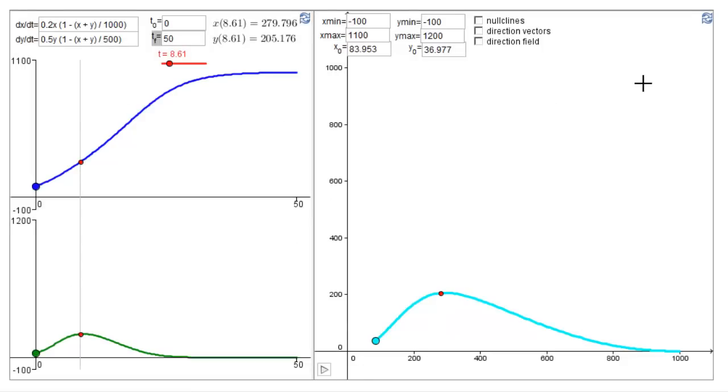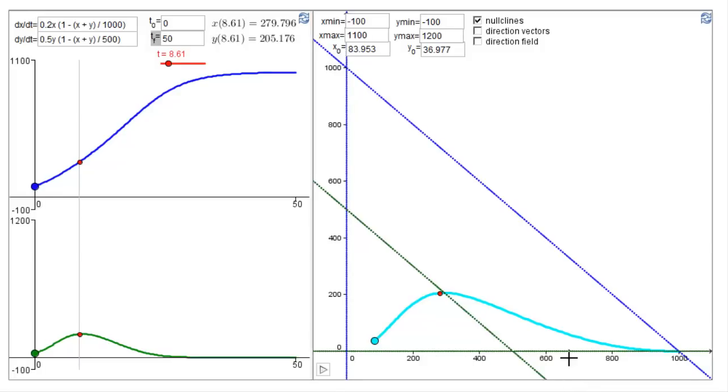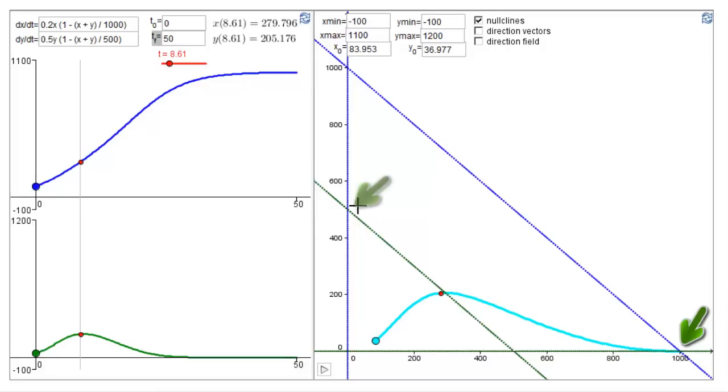In the phase plane applet, you can check the nullclines box to show the nullclines of the system of differential equations. The blue curve is the X nullcline, or A nullcline in our case. And the green curve is the Y nullcline, or B nullcline in our case. And the three intersection points show the three equilibria.